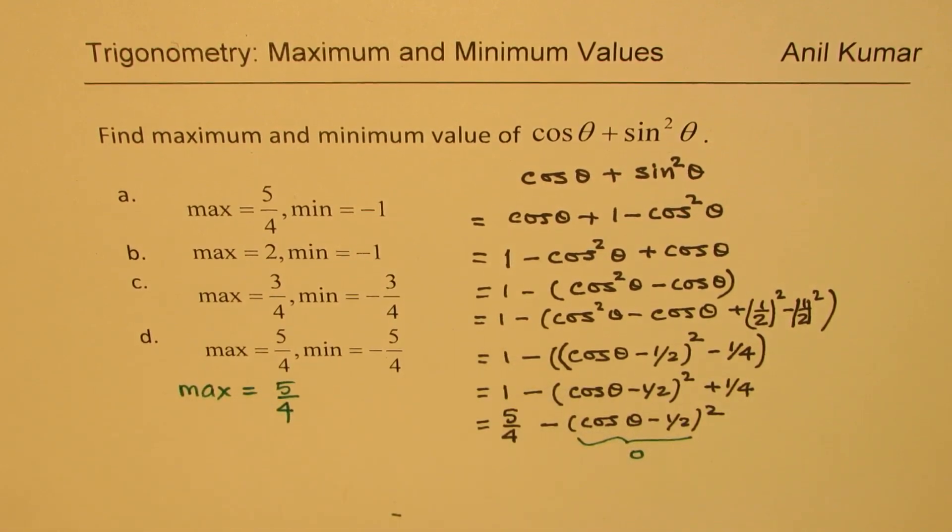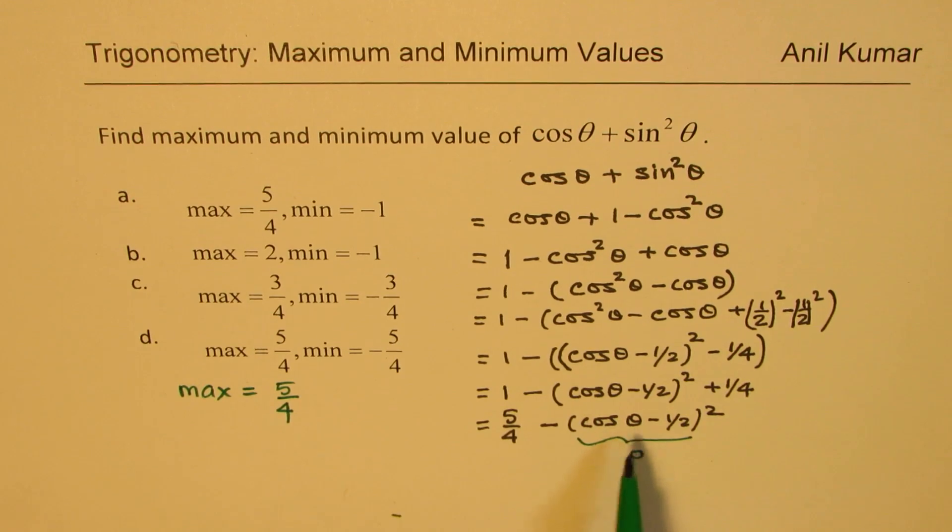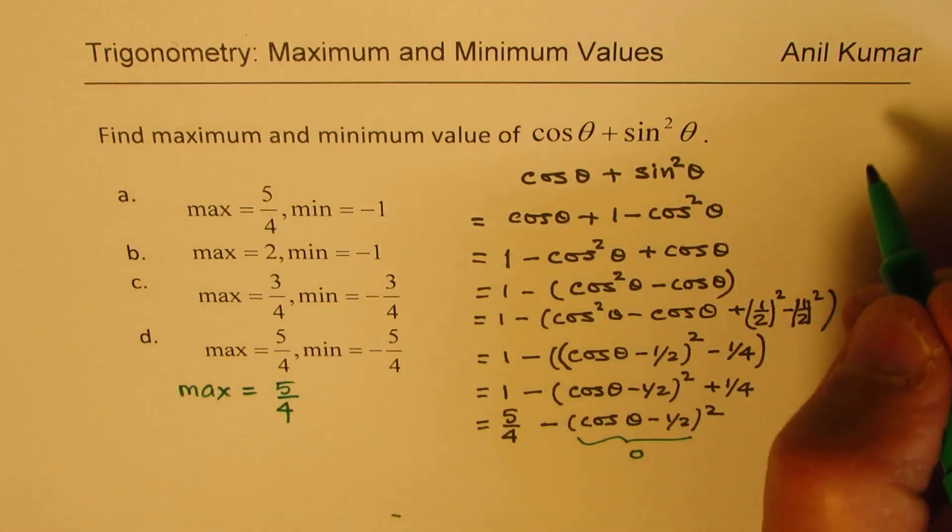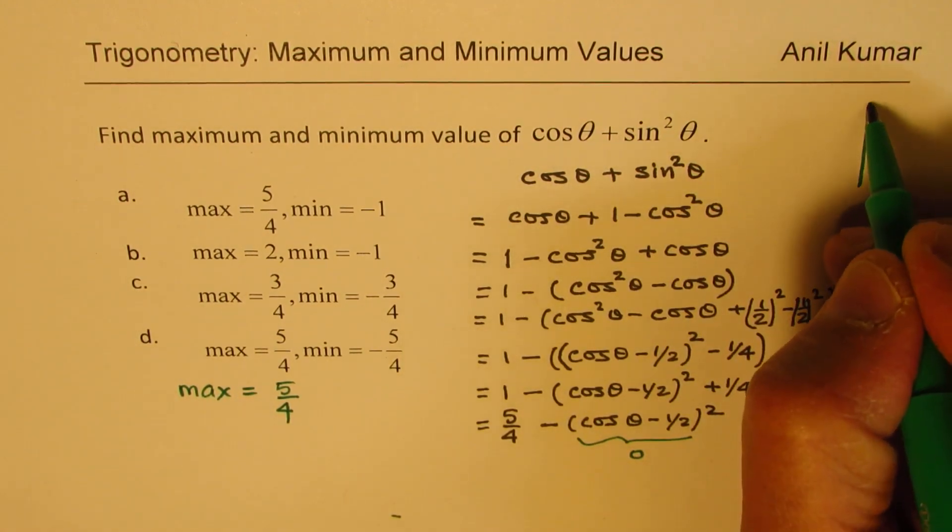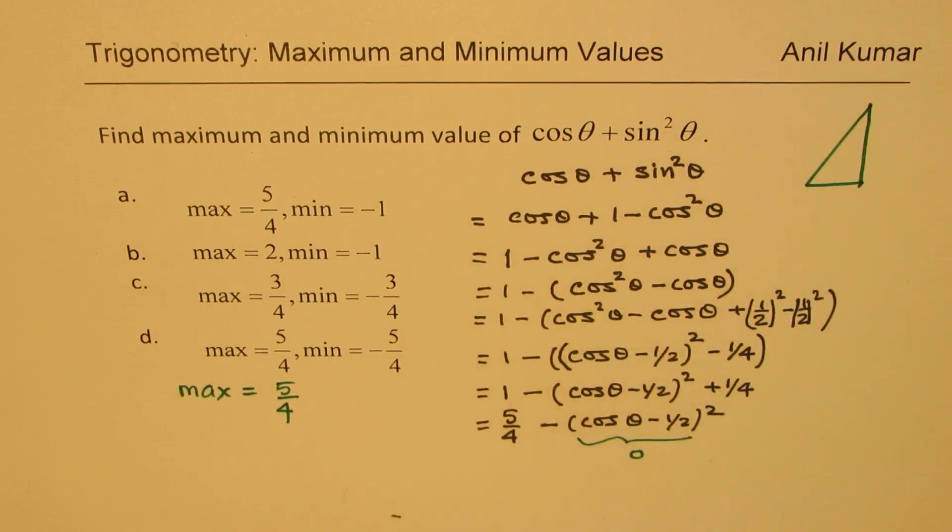Well some of you will be interested in knowing for what value of θ. Of course θ should be such that cos θ is 1/2. So 1/2 - 1/2 will be 0. So in your special triangle, well this is not a part of this, but it is of interest to understand.